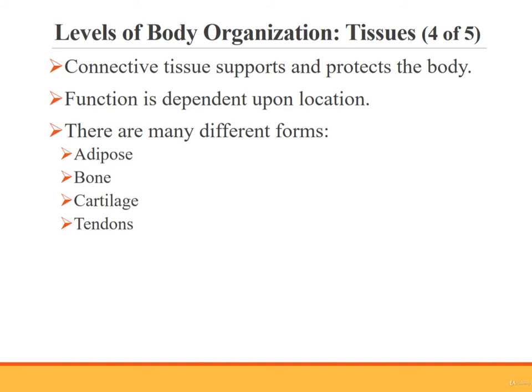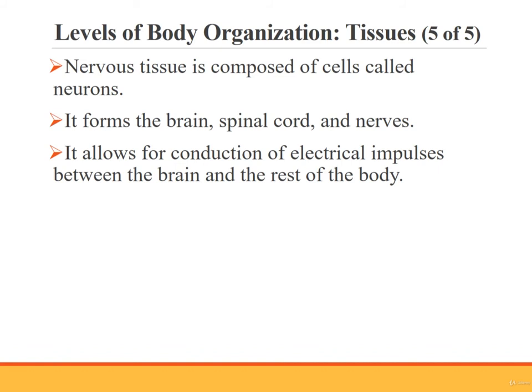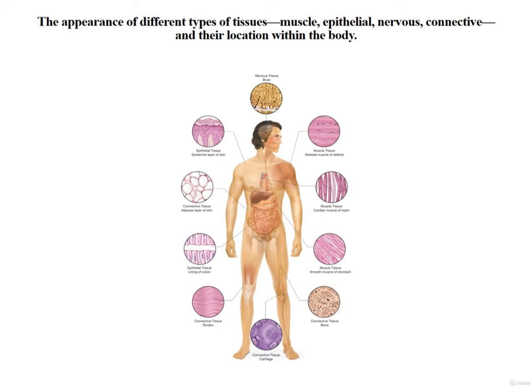Connective tissue supports and protects the body. Its function depends upon where it is located. Connective tissue can appear in many different forms, including adipose, bone, cartilage, and tendons. Nervous tissue is made up of cells called neurons. It forms the brain, spinal cord, and nerves. Nervous tissue allows for the conduction of electrical impulses to send information to the brain and then back to the body. This figure shows the different types of tissues and their location within the body, such as the connective tissue located in the adipose layer of the skin.